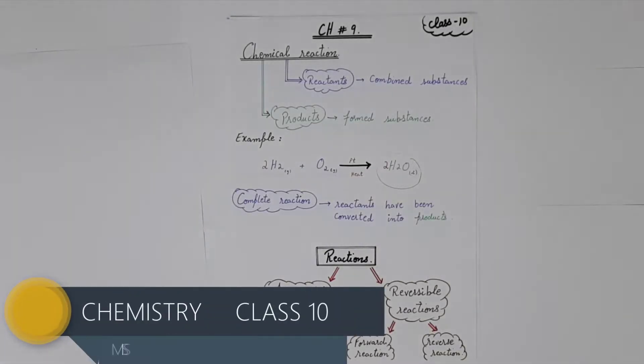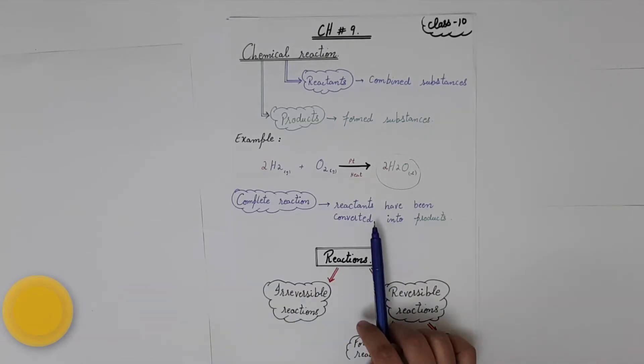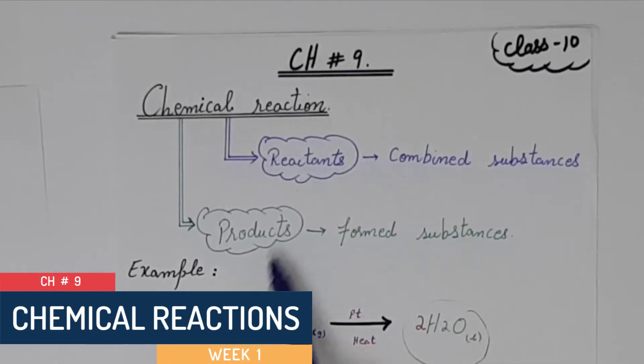Now, before elaborating the term equilibrium in terms of chemistry, let's have a look at some important points. You know chemistry is all about chemical reactions. Chemical reactions involve two substances: number one is reactant, number two is product.